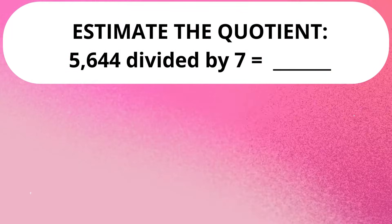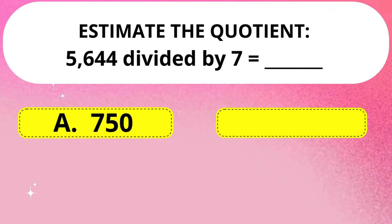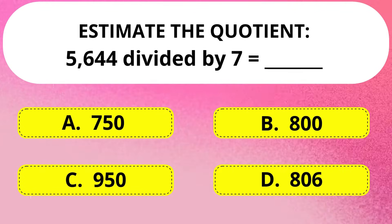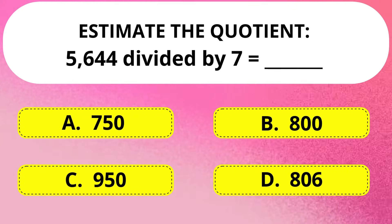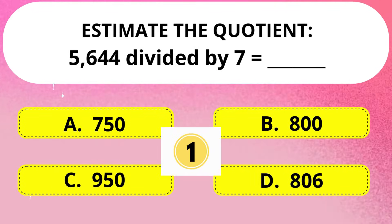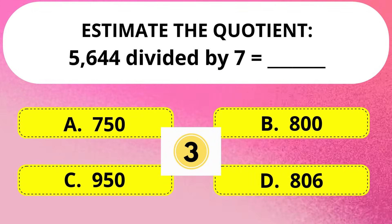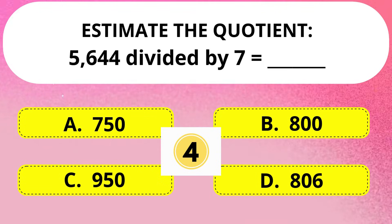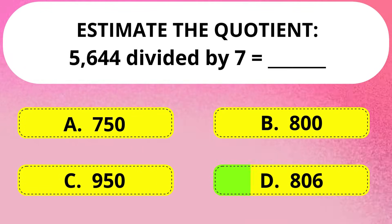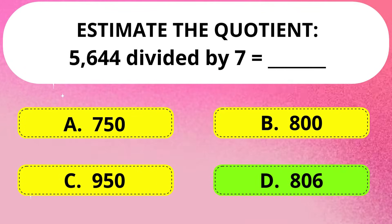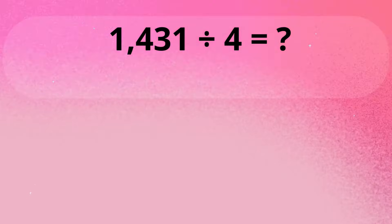Next question. Estimate the quotient: 5,644 divided by 7 is equal to? Answer is Option D: 806.